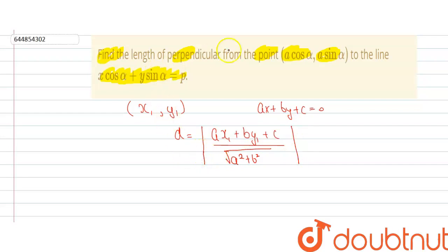Now the given point is A cos alpha and A sin alpha. The line is X cos alpha plus Y sin alpha is equal to P.